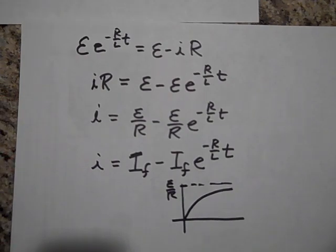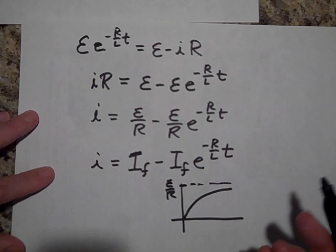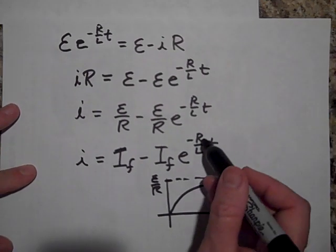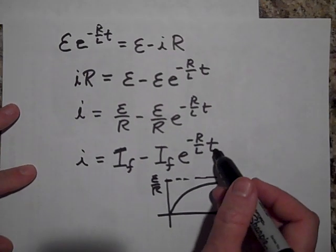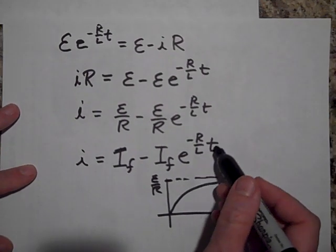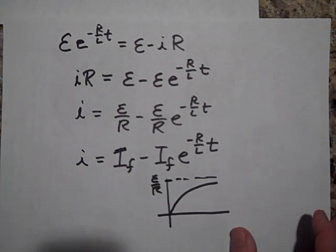The way I remember the constant R/L - it's a goofy thing - I think of rolling logs tumble, rolling logs tumble. That's just a weird mnemonic. I'm going to derive another equation for you in the next video.